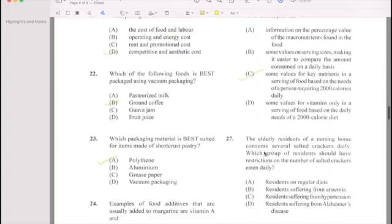27: The elderly residents of a nursing home consume several salt crackers. Which group of residents should have restrictions on the number of salt crackers? That should be hypertension. The answer is C.